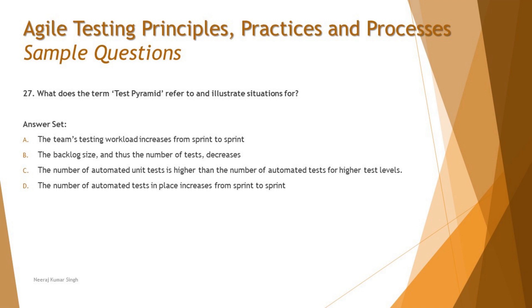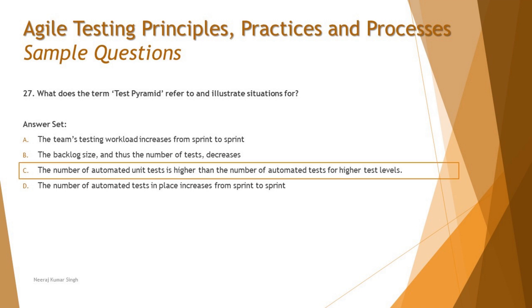Option D says: the number of automated tests in place increases from sprint to sprint — that's in the same vein as option A, relating to sprint-by-sprint workload, which is incorrect. The number of automated tests has nothing to do with the concept of the test pyramid in agile. Therefore the right answer is C — the number of automated unit tests is higher than for any other higher test levels.